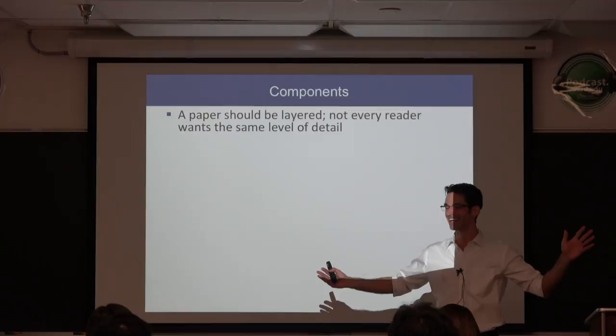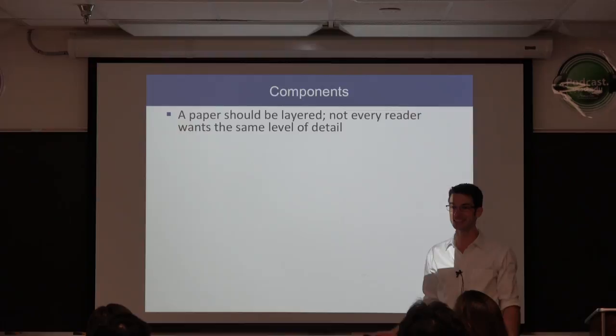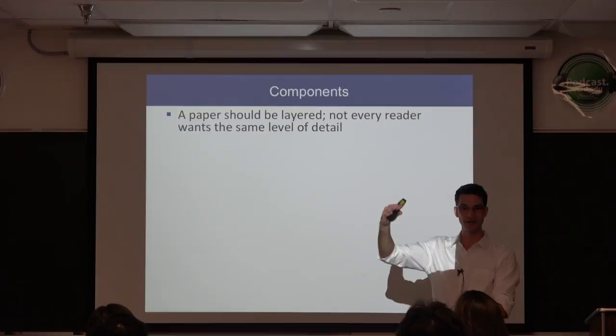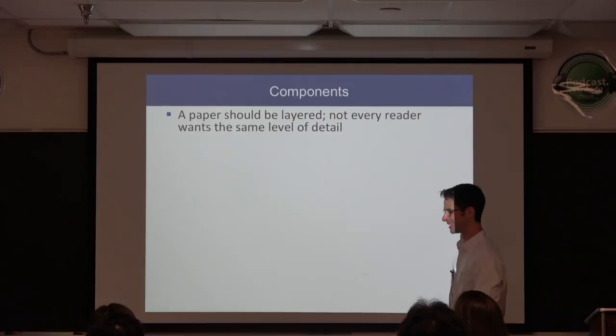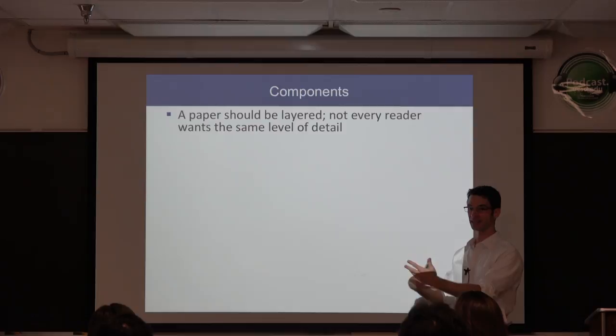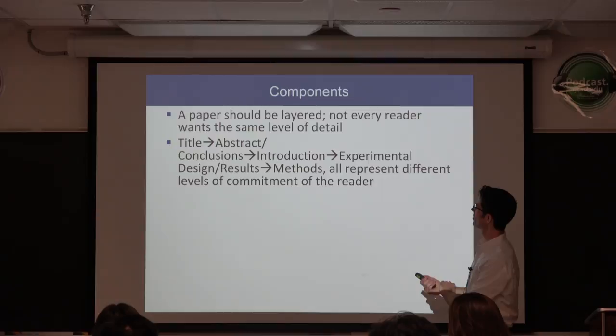What if you only need to know the final result? Then you have this extra layer — a 5 to 200 page monstrosity online, the supporting information, where the real experimental details are. Not everyone wants the same level of detail, and you have to appreciate that your readers are going to want different levels of detail. You have all these different cascaded pieces of the puzzle.